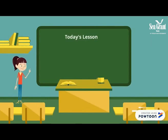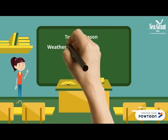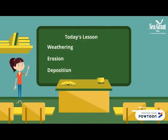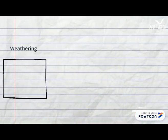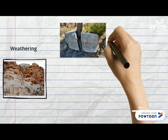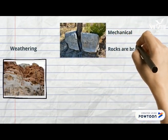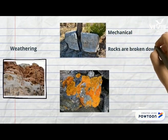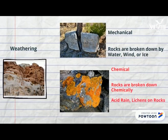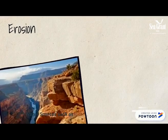Today's lesson is going to be over weathering, erosion, and deposition. You have two types of weathering: mechanical and chemical. Mechanical, like the rock being broken apart by tree roots, or chemical, like the rock being broken down by fungus, lichen, or acid on the rock.